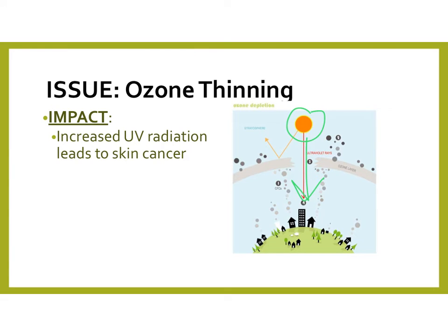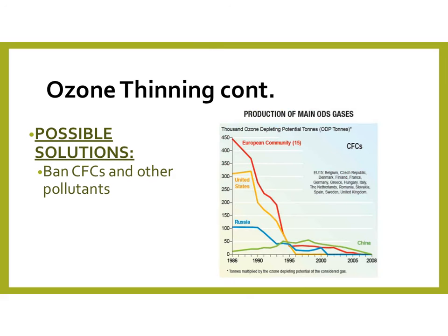If the ozone thins or a hole forms, we are going to be more exposed to UV radiation. If you know about UV light, this could lead to skin cancer in humans, but for other organisms as well. The solution would be to ban those chemicals causing this problem, and it has been banned in a lot of countries. However, CFCs are not banned in all countries. This really needs to be a global effort to reduce these issues because we share the same water, air, and land.